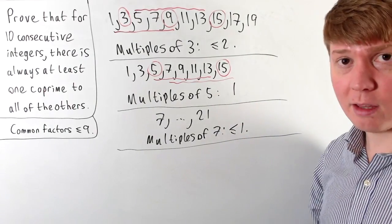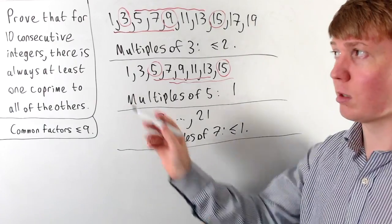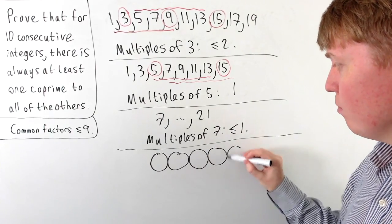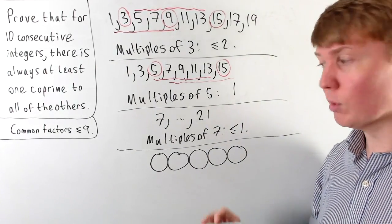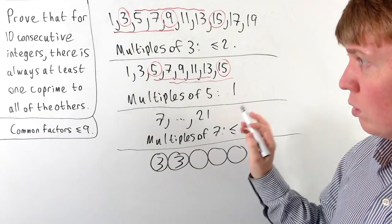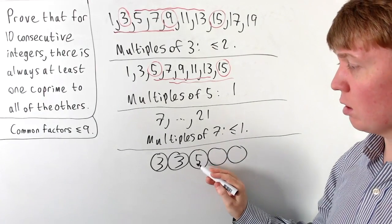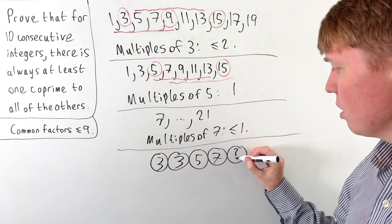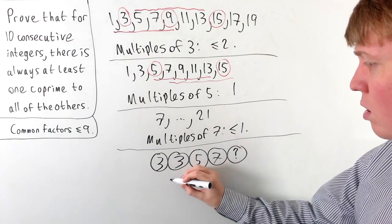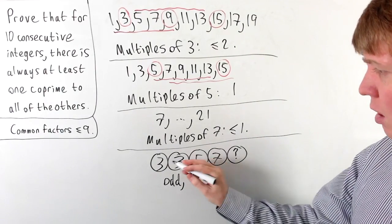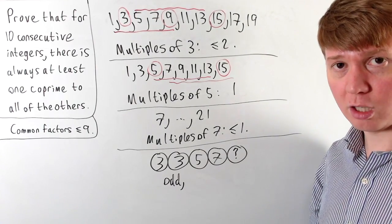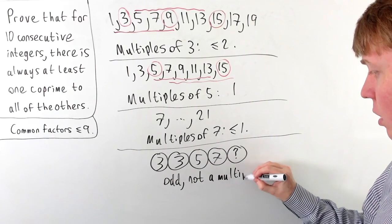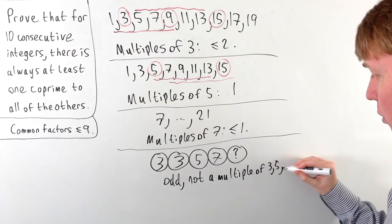Now if we bring all of this together, we can extract useful information about our odd numbers in this list of 10 consecutive integers. Of our 5 consecutive odd numbers, at most 2 can be multiples of 3, at most 1 is a multiple of 5 (which could also be a multiple of 3), and at most 1 is a multiple of 7. So there must be another integer — one of our odd numbers — which is not a multiple of 3, not a multiple of 5, and not a multiple of 7.